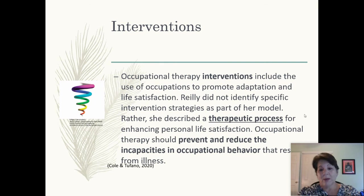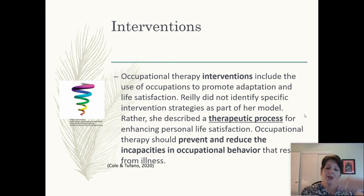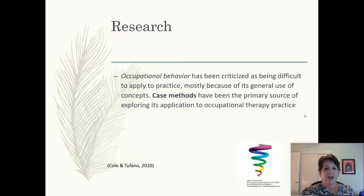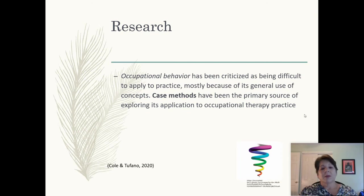For interventions, Mary Riley says we need to use occupations to promote adaptations. She doesn't tell us exactly what to do — it's all dependent on the person and your therapeutic use of self. As long as you're looking at the person, their desired occupations, and using those occupations to promote adaptation and prevent and reduce incapacities in occupational behavior, you're on the right track. Research is basically non-existent with this model because of the time period. There were some case methods completed and case examples in her book, and that's pretty much the research available from that time.